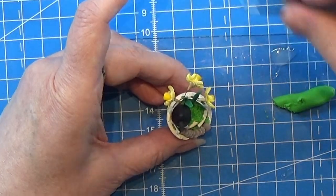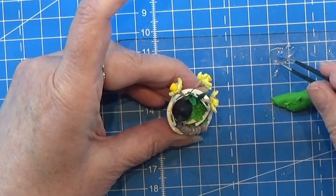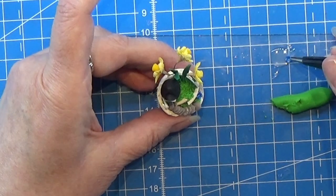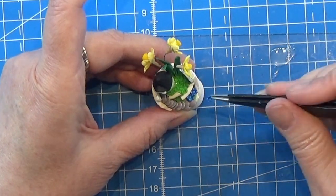We need some of these shimmery bluish flowers that we made earlier, so I'm just dipping them into the fimo liquid and placing them where I want them around this little garden area here.